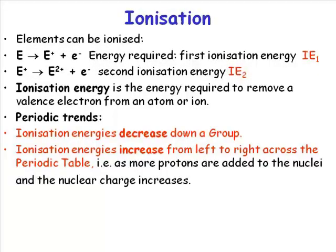Ionization energies decrease down a group because the principal quantum number is increasing. The principal quantum number governs the energy of those electrons. Ionization is removing an electron from an atom or ion to infinity — taking it away entirely. As more protons are added to the nucleus, the nuclear charge increases. But as we're going from left to right, we're also adding more electrons, and those electrons are not so good at shielding each other.